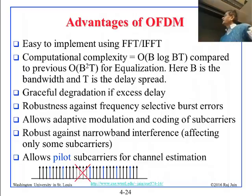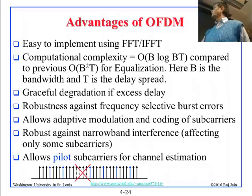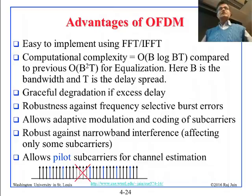OFDM is also robust against narrowband interference — a small band of noise hitting one region. It allows pilot subcarriers: some frequencies can be used just for measurement rather than data, so you can figure out where there is noise and adjust modulation accordingly. Even without pilot feedback, the physical layer measurements tell you how much noise there is, and you can decide how to modulate each channel.